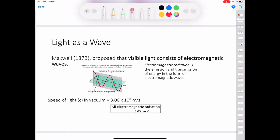There are many kinds of waves, such as water waves, sound waves, and light waves. In 1873, James Clerk Maxwell proposed that visible light consists of electromagnetic waves. According to Maxwell's theory, an electromagnetic wave has an electric field component and a magnetic field component. These two components have the same wavelength and frequency, and hence the same speed, but they travel in mutually perpendicular planes, as shown in this picture right here. The significance of Maxwell's theory is that it provides a mathematical description of the general behavior of light. In particular, his model accurately describes how energy in the form of radiation can be propagated through space as vibrating electric and magnetic fields.